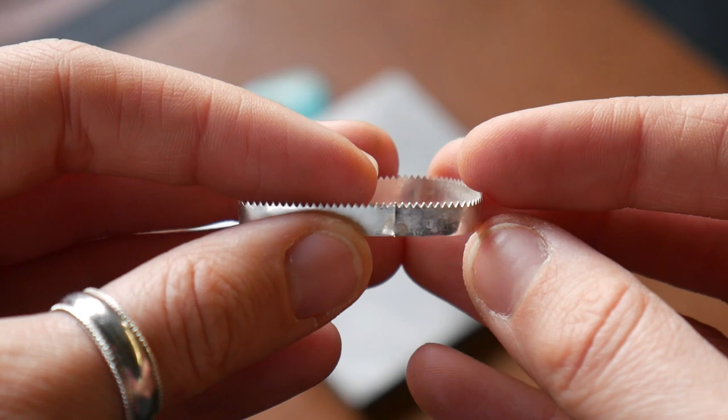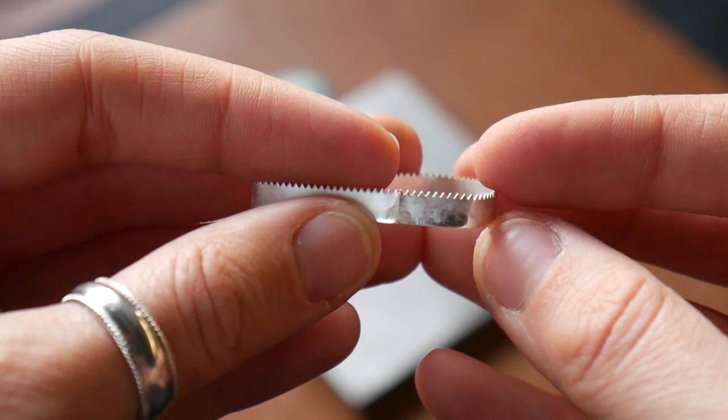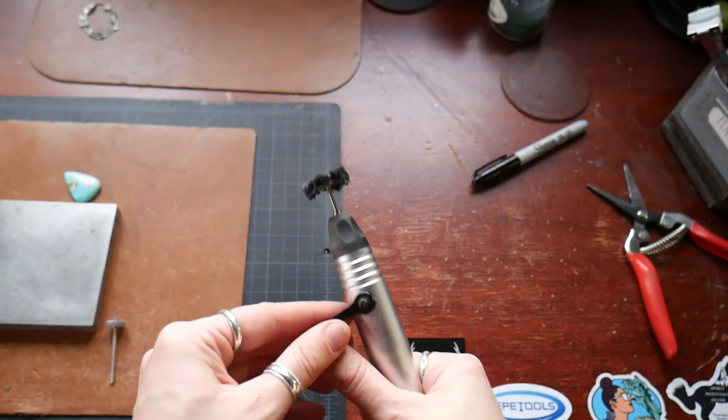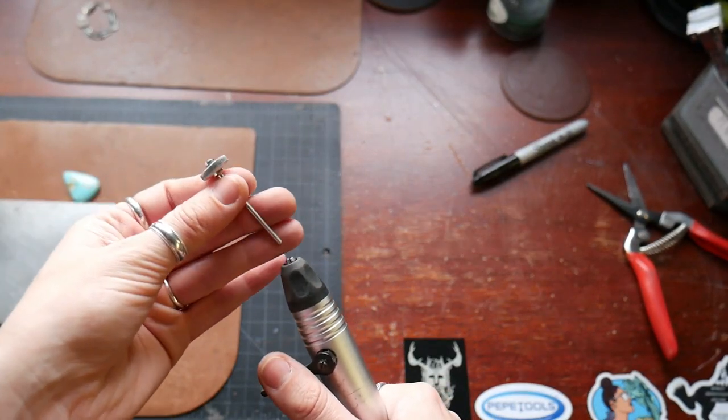Now I also notice that I have a little bit of excess solder at that seam. So what I'm going to do is use a white coarse silicone polishing wheel to just clean up that excess solder.